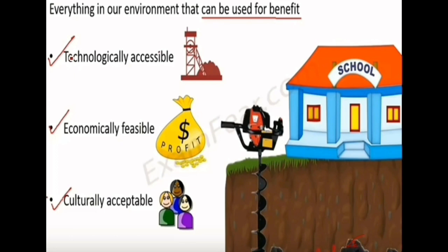The second condition is economically feasible. That means the value of the coal should not be lower than the cost of extraction. For example, imagine the coal beneath the school is worth 50,000 rupees but the cost of extraction is 1 lakh — there is no meaning in extracting this coal.